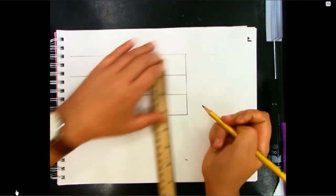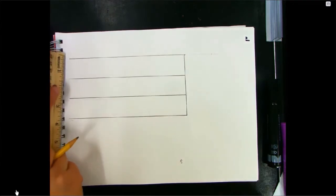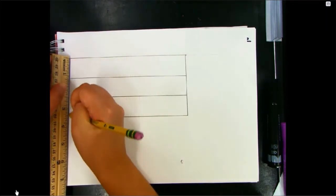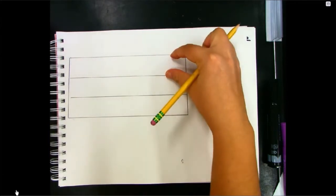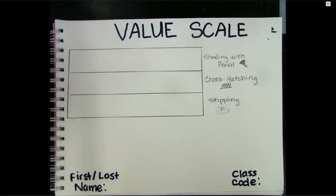As you see on the screen, we have now added 'VALUE SCALE,' 'shading with pencil,' 'cross hatching,' and 'stippling,' as well as the name and class code. Please write this on your paper as well.